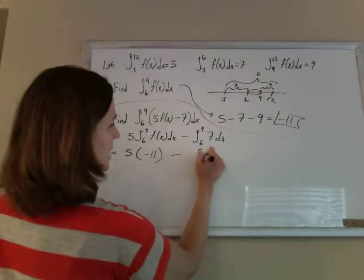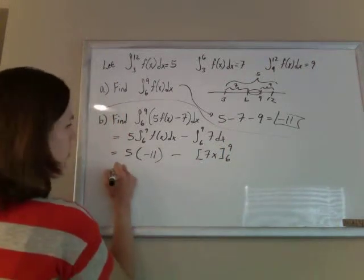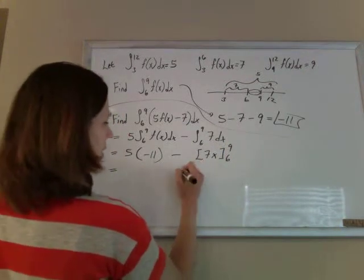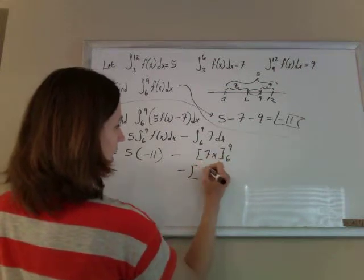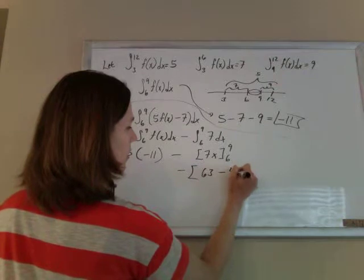The antiderivative of 7 is 7x, and we're going to evaluate that from 6 to 9. So this part here, plug in the 9, I get 63, minus plug in the 6, I get 42.